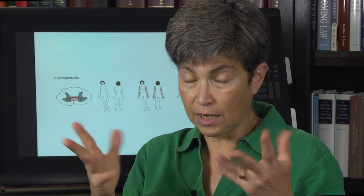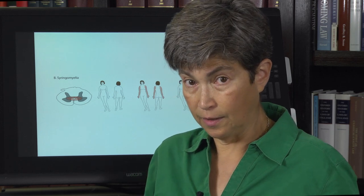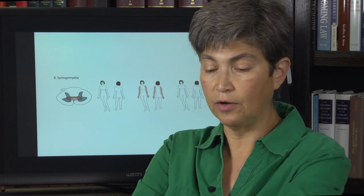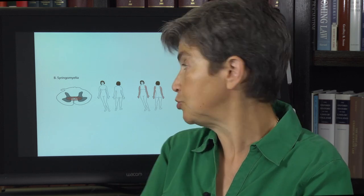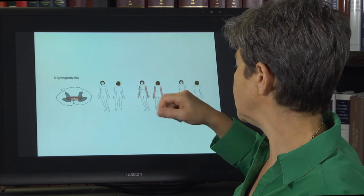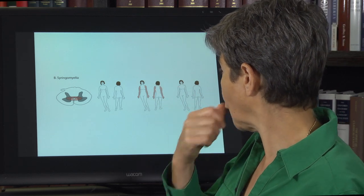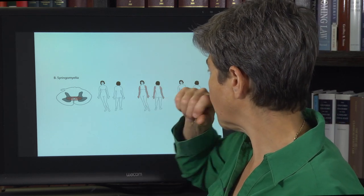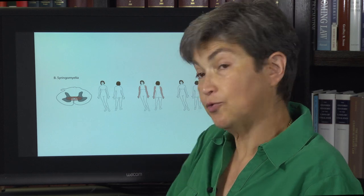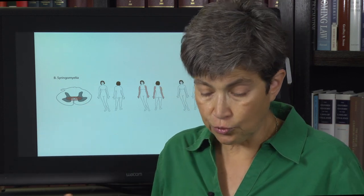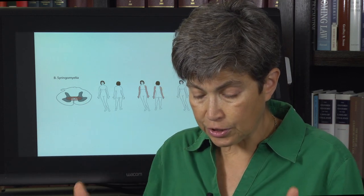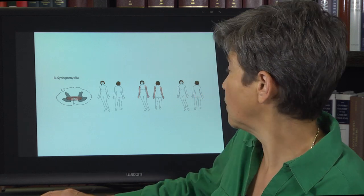This bilateral loss of pain and temperature typically presents in a glove distribution — longer or shorter depending on extent. So that's syringomyelia. It's a classic lesion that helps you remember this key detail about the pain and temperature pathway — the spinothalamic pathway — specifically that its crossing fibers are vulnerable at the level of the central canal.